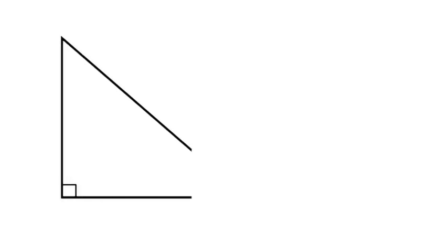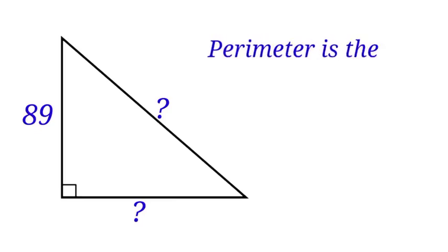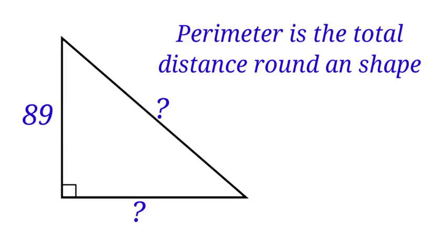Given a right-angled triangle of height 89 units, the hypotenuse is not given and the base is not given. We are to find the perimeter of the right-angled triangle. Perimeter is the total distance round a shape. For us to find the perimeter of this triangle, we need to know the length of the three sides and we are given just one of it.